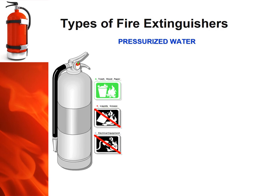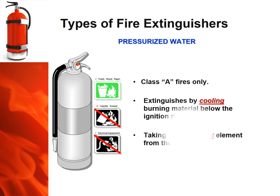The pressurized water fire extinguisher is a class A extinguisher used on class A fires only. We use the Indian type brand here at WC Striegel. They build pressure using a hand pump, generally hold about 2.5 gallons, and have about a 30 to 40 foot maximum effective range. Class A fire extinguishers work by cooling burning material below the ignition point, removing the heat element from the fire.